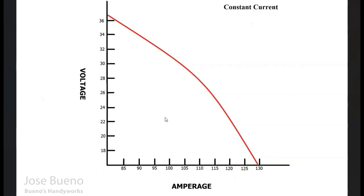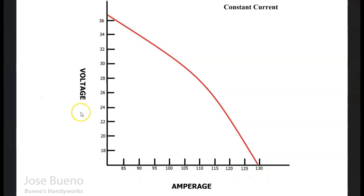Let's use this volt-ampere curve to understand constant current better, using shielded metal arc welding as our example. Amperage is on the bottom — a range from about 85 amps up to 130 amps — and voltage is on the left, ranging from about 18 volts up to 36 volts. With manual welding processes, we need a high number of volts to start the welding arc.